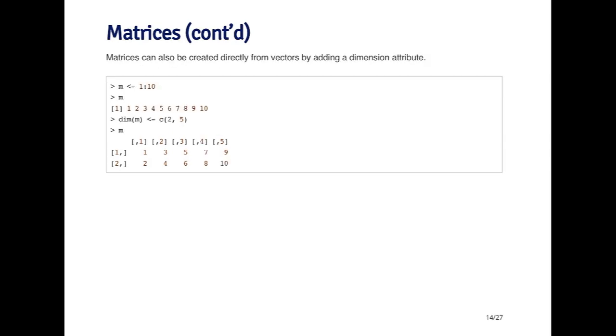You can also create a matrix by creating the dimension attribute on a vector. For example, I can create a vector that's a sequence one to ten, and then add the dimension attribute to it. Here I'm using the dim function,